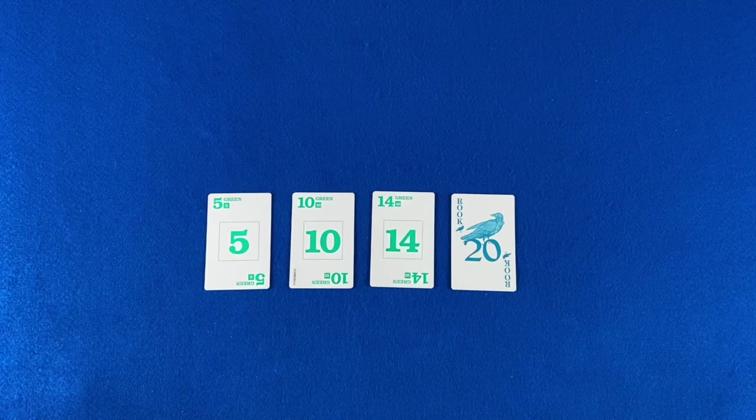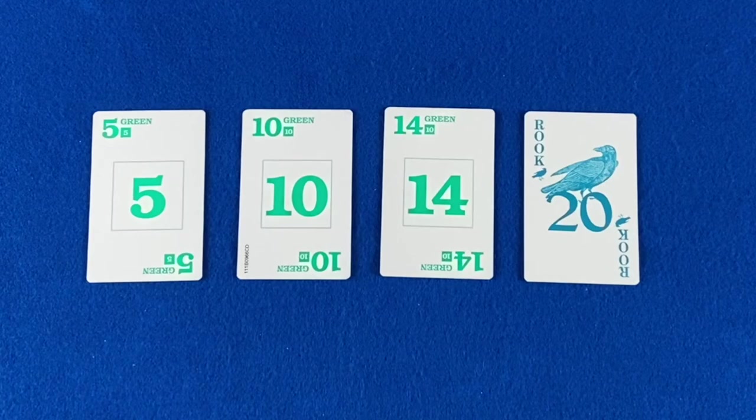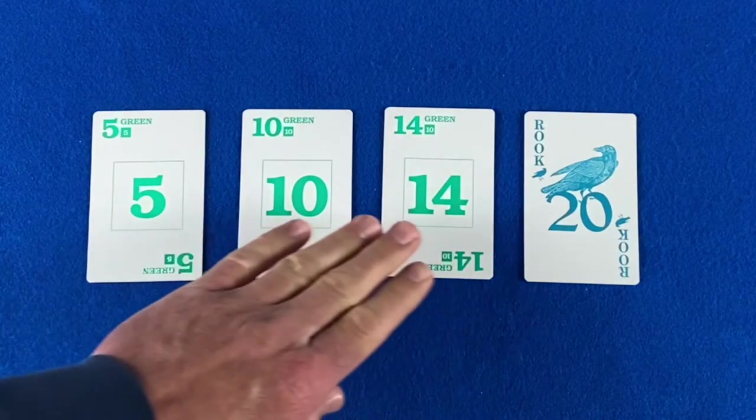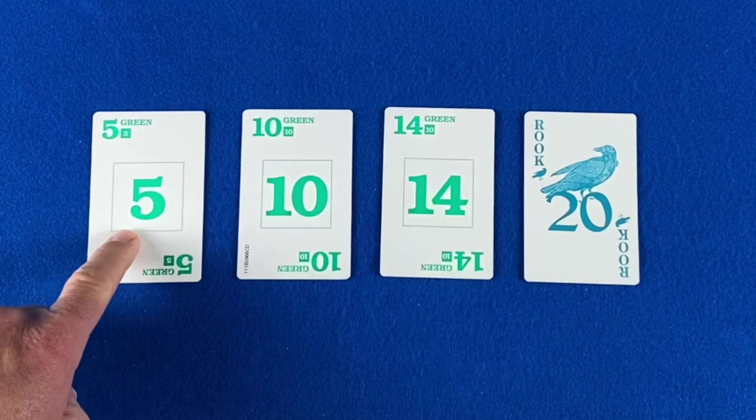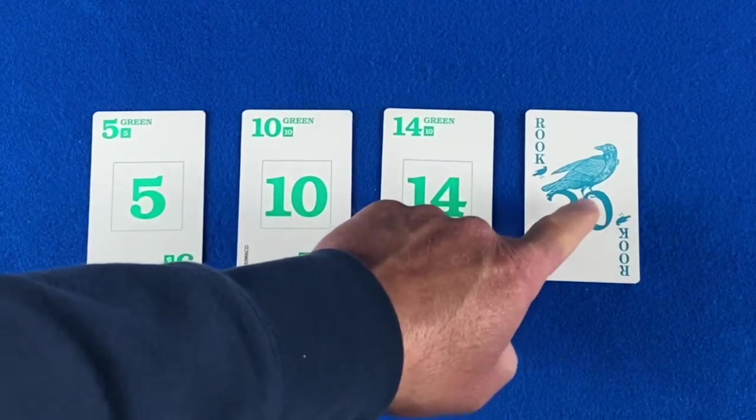Points are earned as a team. Each player should look at the tricks they captured, and separate out any count cards. 5's are worth 5 points. 10's are 10. 14's are 10. And the rook is worth 20.